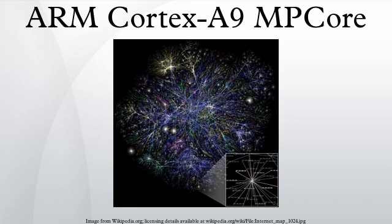The ARM Cortex-A9 MPCore is a 32-bit multi-core processor providing up to four cache-coherent Cortex-A9 cores, each implementing the ARM ARMv7 instruction set architecture.